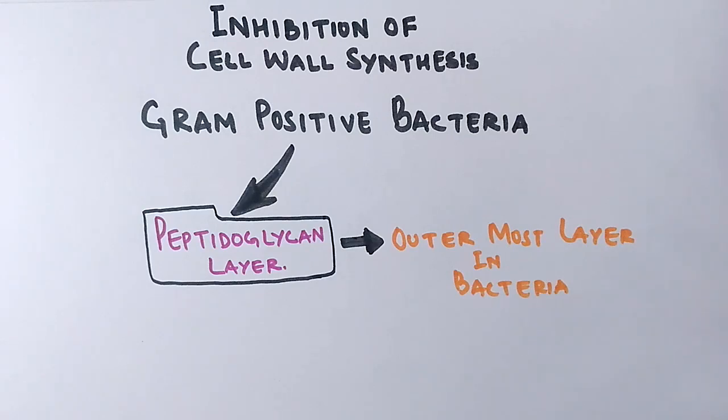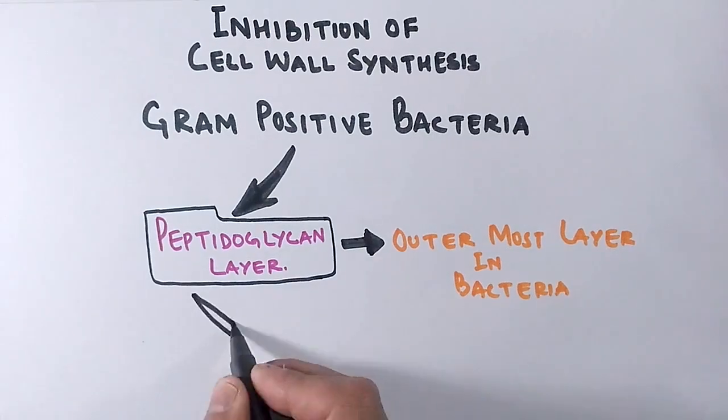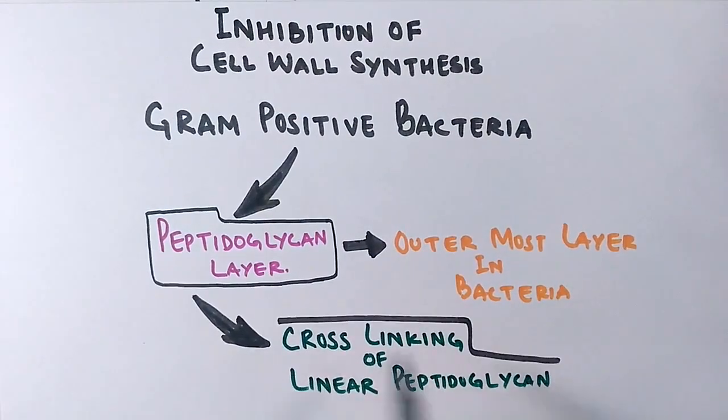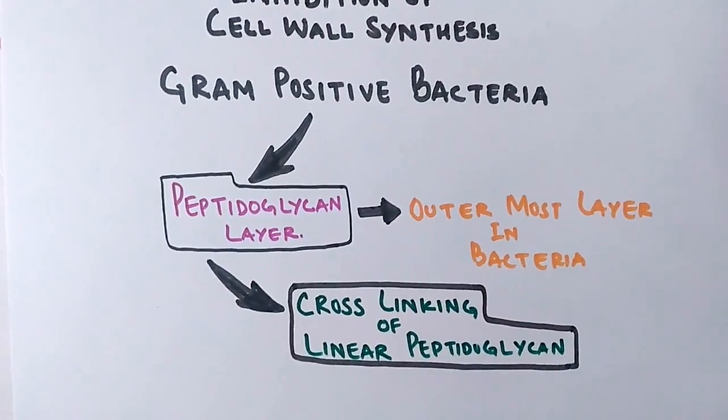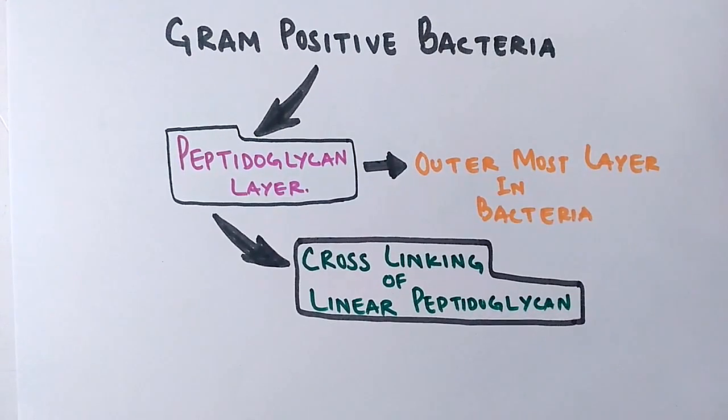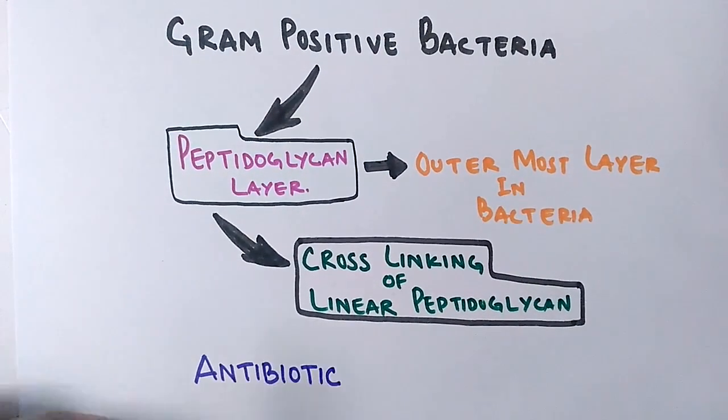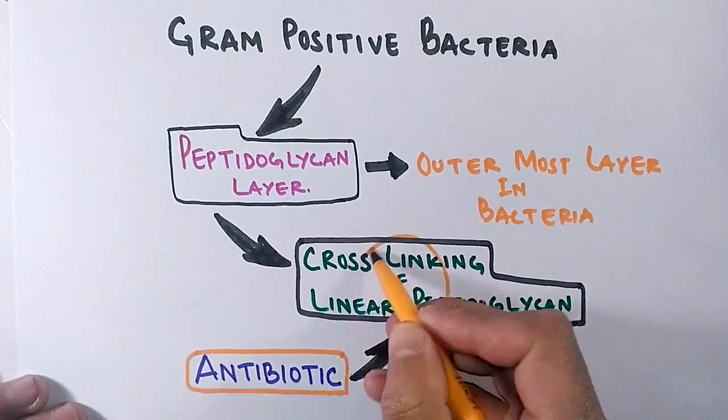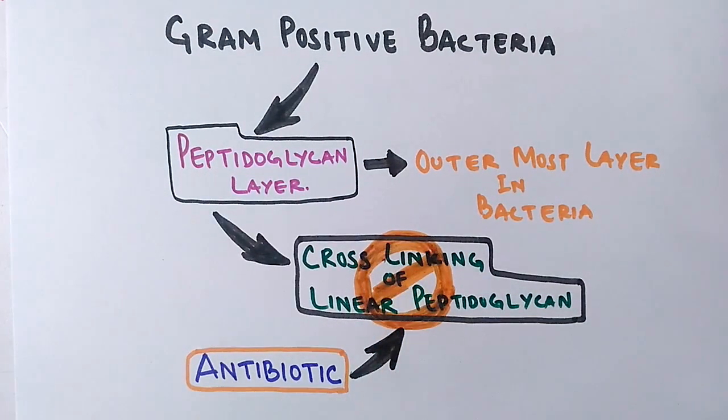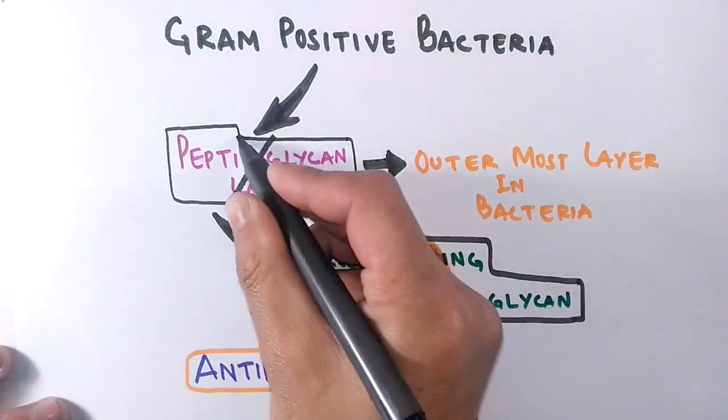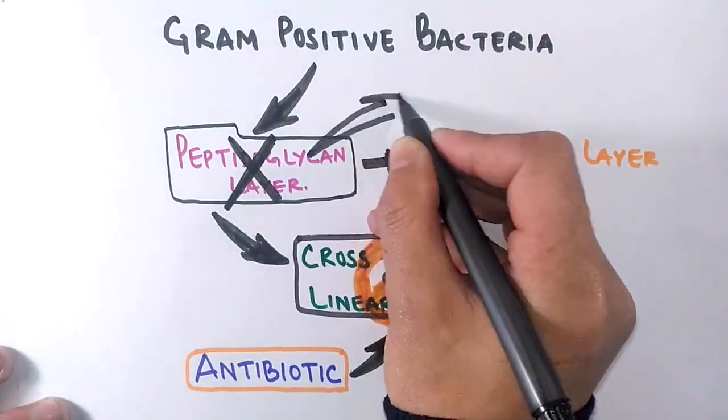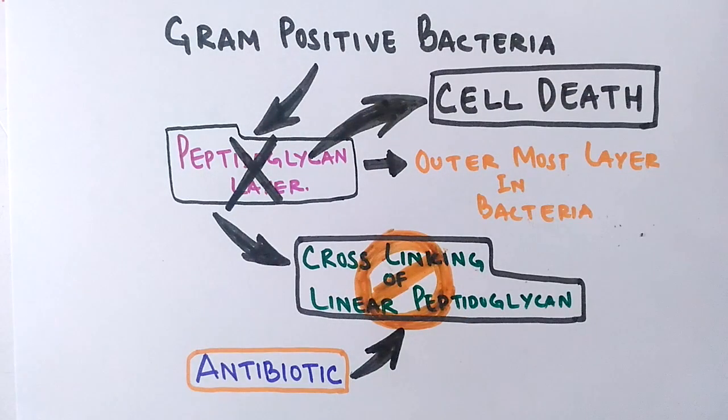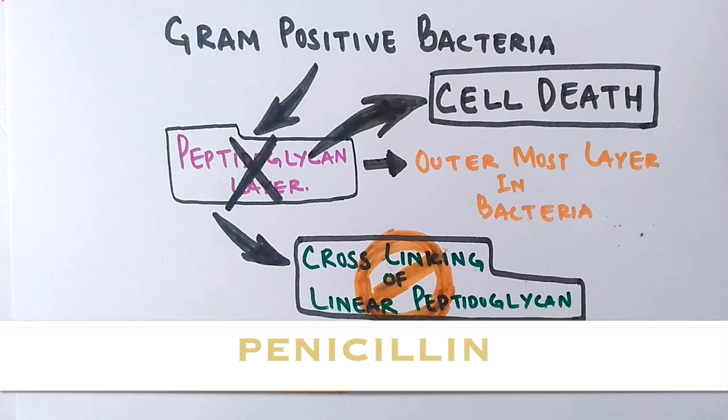In the making of peptidoglycan, there is cross-linking of linear peptidoglycan chains. Antibiotics inhibit the cross-linking of linear polypeptide chains, so the peptidoglycan layer is not made. When the peptidoglycan layer is not made, cell death occurs. Antibiotics which cause inhibition of cell wall synthesis include a group called penicillins, including amoxicillin, beta-lactam antibiotics, and many others.